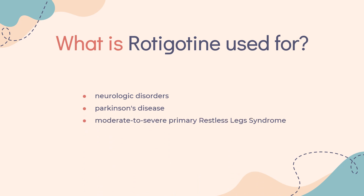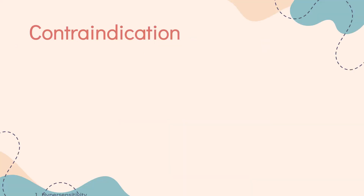What is Rotigotine used for? It is used for treatment of neurologic disorders including Parkinson's disease, as well as moderate to severe primary restless leg syndrome.